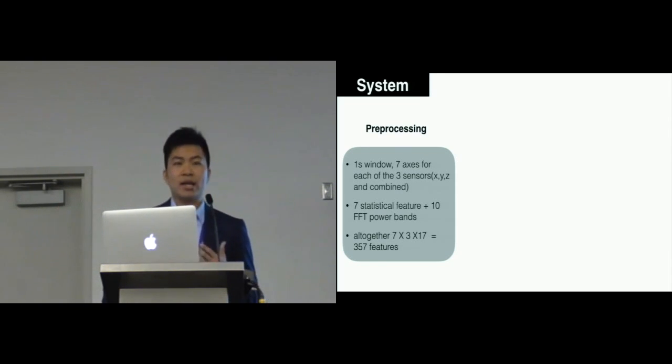Altogether, we collected seven statistic features from the one-second window, and then we perform a fast Fourier transform on the window and produce 25 power bands. We keep the lower 10 bands because this band range should be sufficient to cover the frequency feature of our gestures. For more details of the pre-processing process, please refer to our paper.